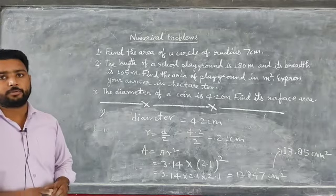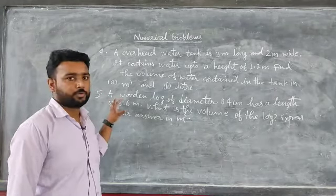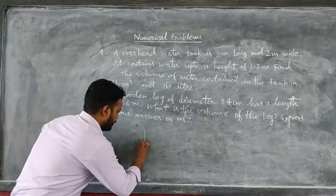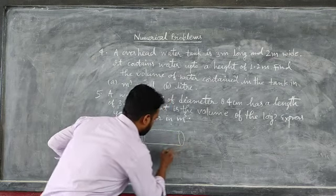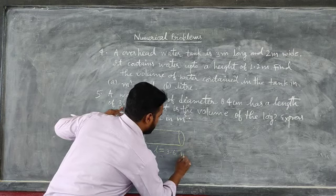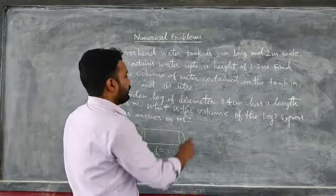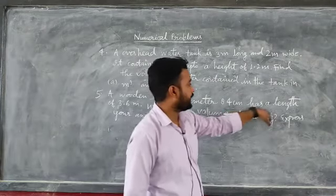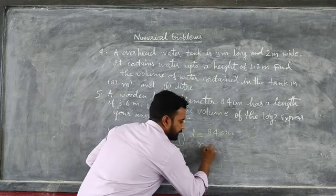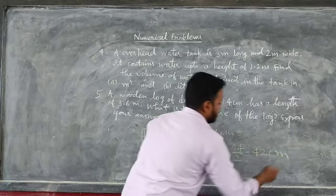We will now discuss question number 4. A wooden log of diameter 84 centimeters has a length of 3.6 meters. Since this is the shape of a cylinder, we find the radius: radius equals 84 divided by 2, which is 42 centimeters. We convert this to meters: 0.42 meters, so that radius and height are in the same unit.